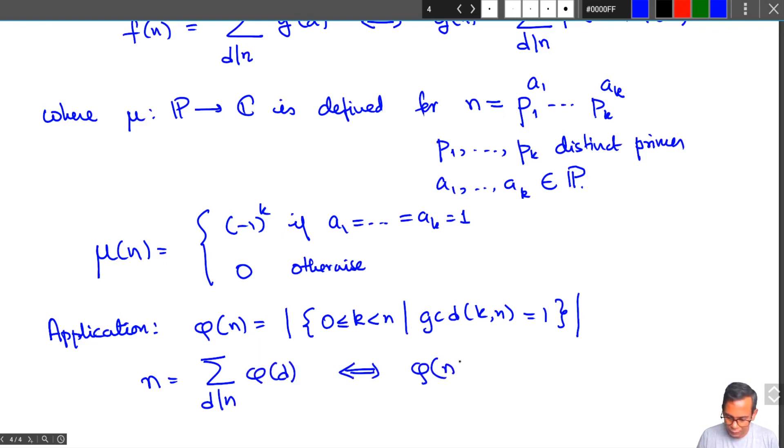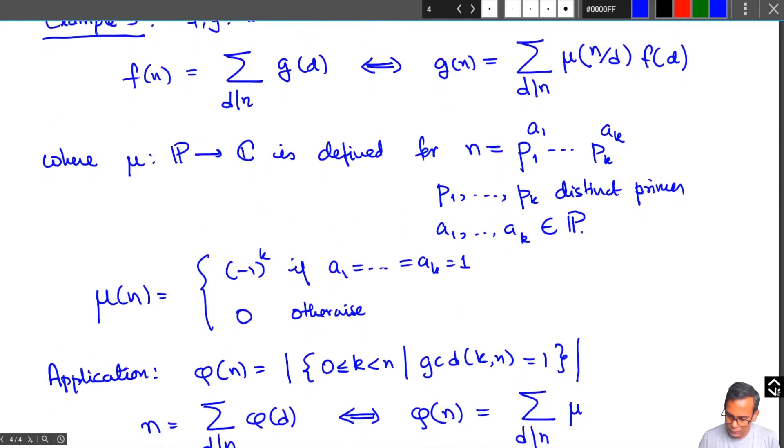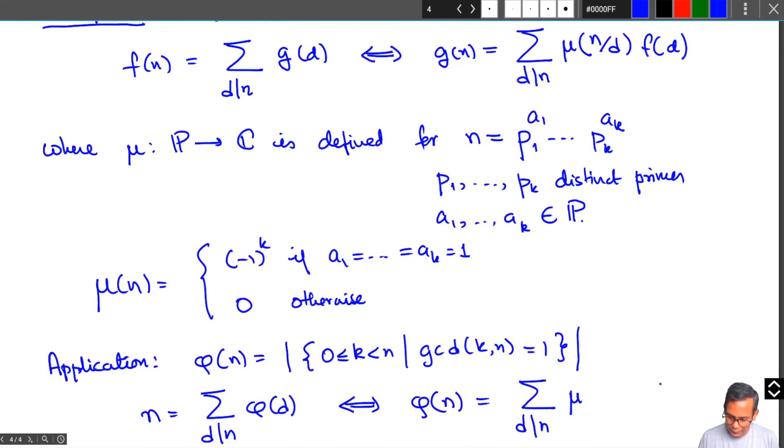Which says that φ(n) = summation d divides n μ(n/d) × d. I just apply this formula here; my g is φ and f(n) is just n, so I take μ(n/d) times d.